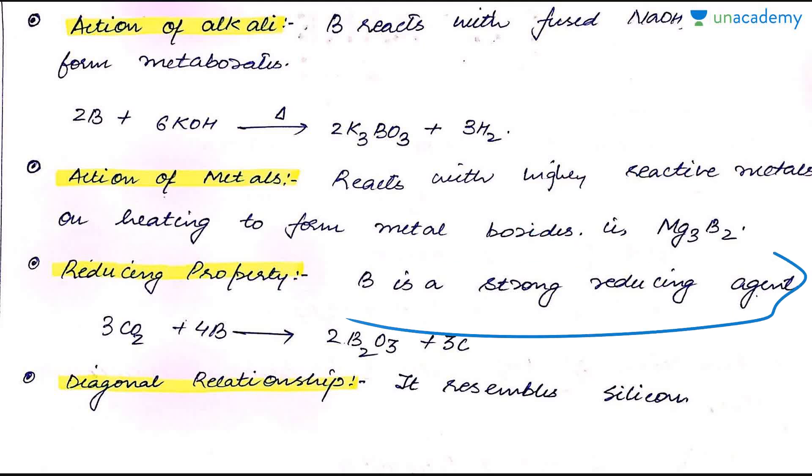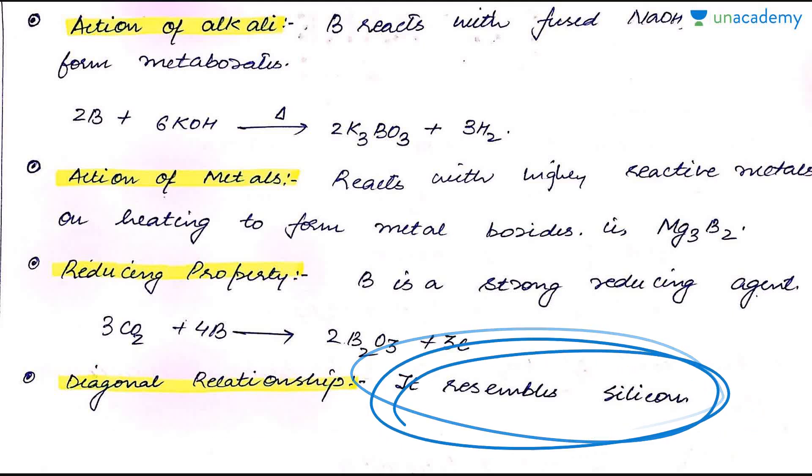Boron is a strong reducing agent as it can get oxidized from B plus 1 to B plus 3 because of its strong tendency to exist in the plus 3 oxidation state. It reduces other elements very quickly. For example, it is reducing CO2 and forming B2O3 plus elemental carbon. Lastly, it resembles silicon, showing diagonal relationship with silicon because of its size, ionization enthalpy, and other physical properties.